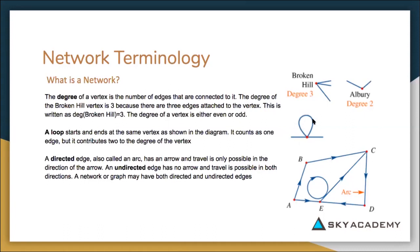Here we have a loop, and a loop is an edge that comes back to the same vertex. So as we can see, this edge starts here and it comes back around to the same vertex, so it is considered as one edge.